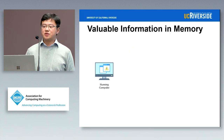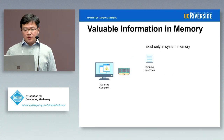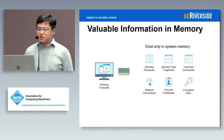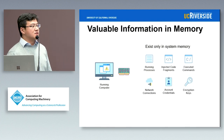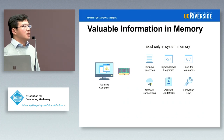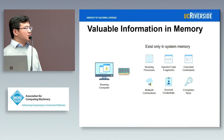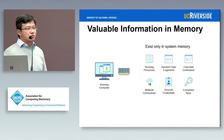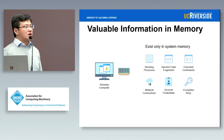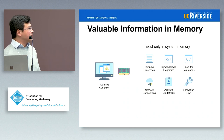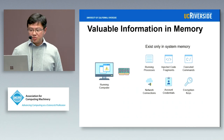There are lots of valuable pieces of information in memory, ranging from running processes, injected code, network connections, credentials, and so on. But memory in general is pretty large — nowadays you have 8 gigabytes or 16 gigabytes or more — and there are all kinds of data structures you need to look into, so the problem itself can be pretty complex.